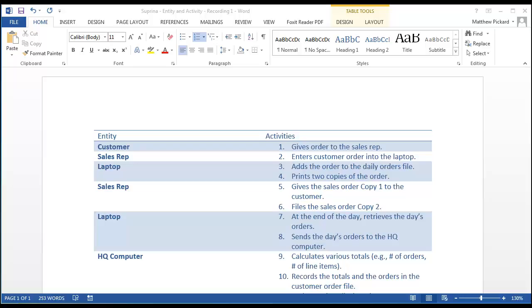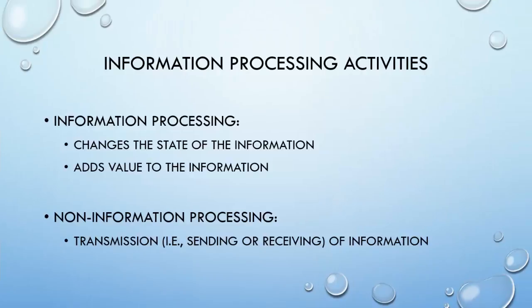So before we begin, let's review the guidelines for identifying information and non-information processing activities. First, an activity is considered information processing if it changes the state of the information. This can include creating, retrieving, updating, or deleting information. Second, an activity is also considered information processing if it adds value to the data — for example, having a clerk verify the correctness of batch totals increases our confidence in the data and therefore increases its value.